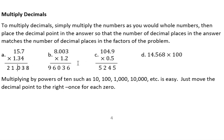So where does the decimal point belong here? 8.003 times 1.2. We have 4 decimal places between the two factors. So our decimal point needs to go so that we have 4 decimal places in our answer: 9.6036.